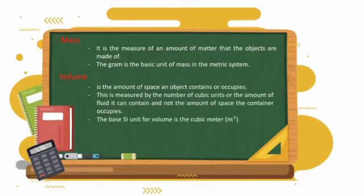Volume is the amount of space an object contains or occupies. This is measured by the number of cubic units or the amount of fluid it can contain, and not the amount of space the container occupies. The base International System of Units for volume is the cubic meter.